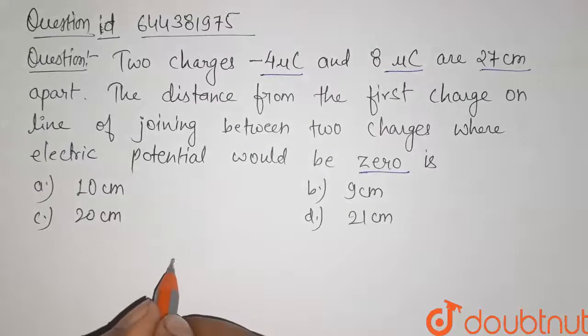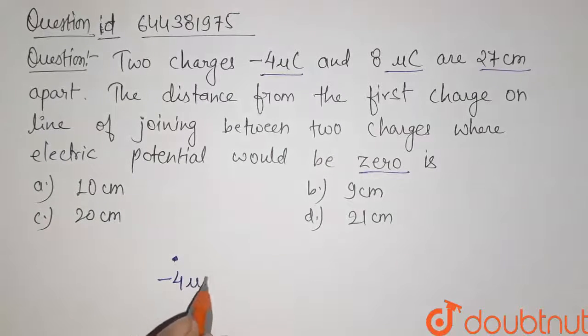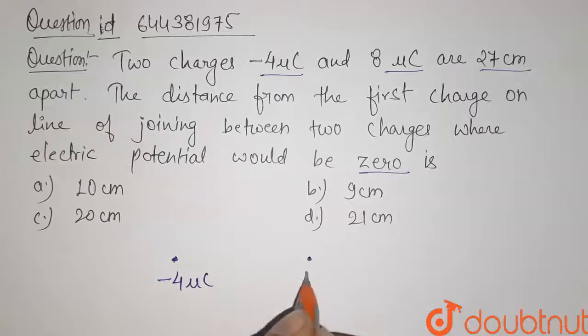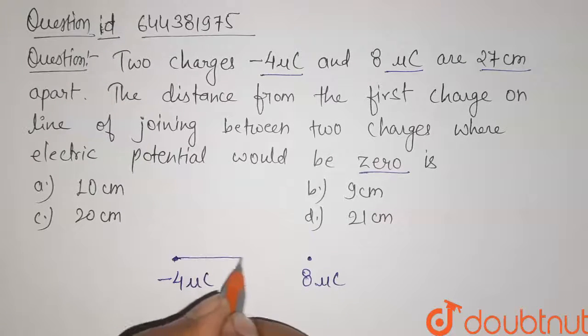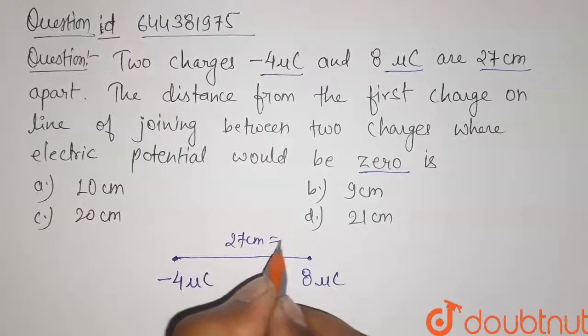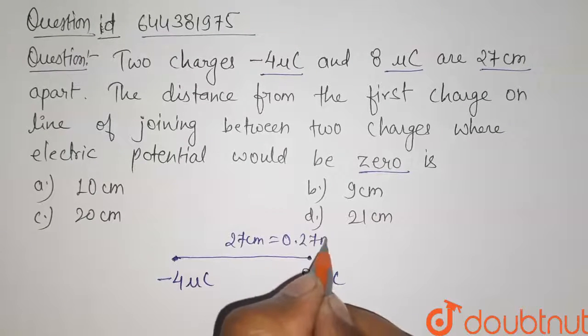So here it is given that this is our first charge of charge minus four micro coulomb and this is our second charge having charge eight micro coulomb. The distance between them is 27 centimeter, that means 0.27 meter.